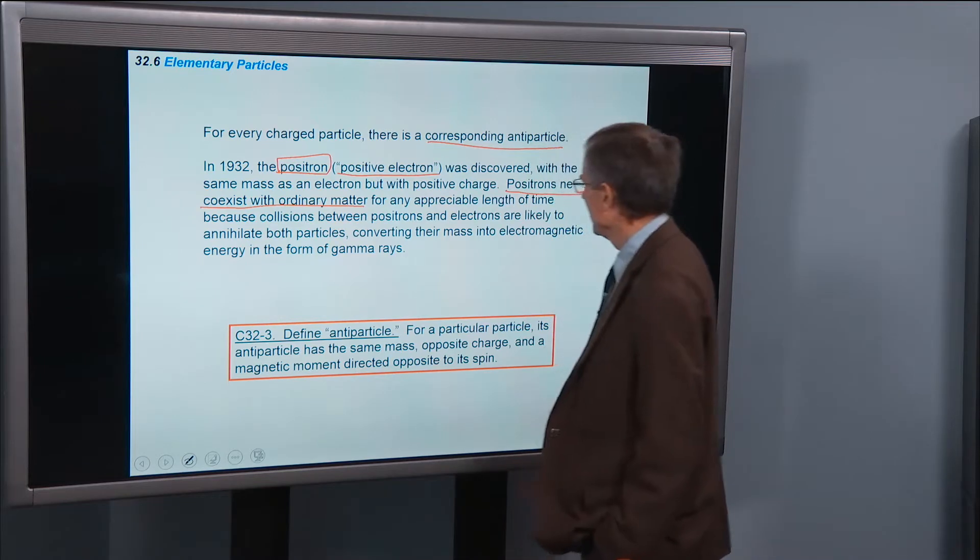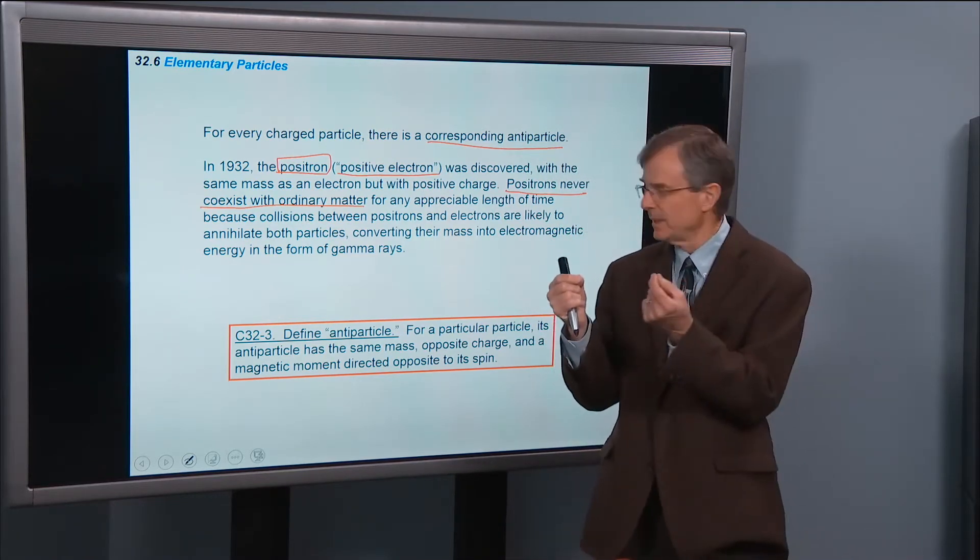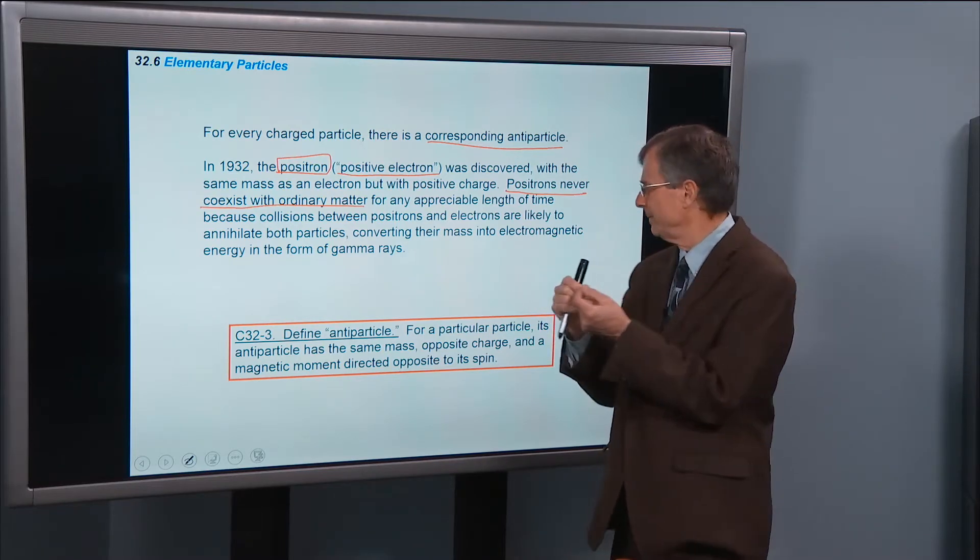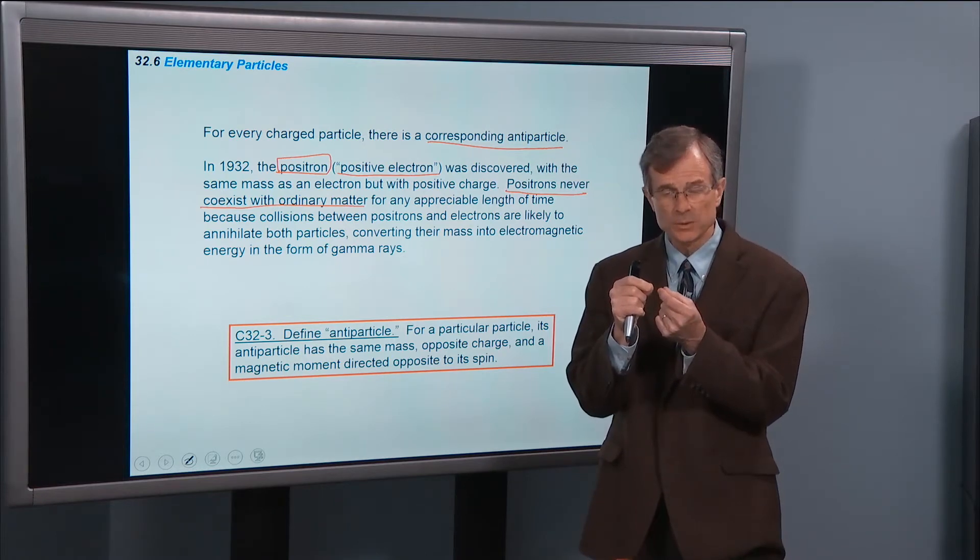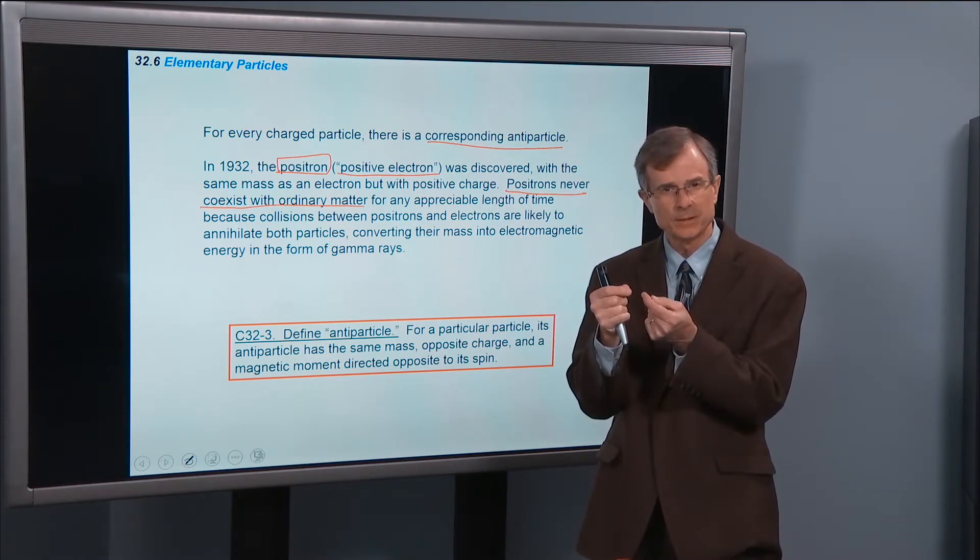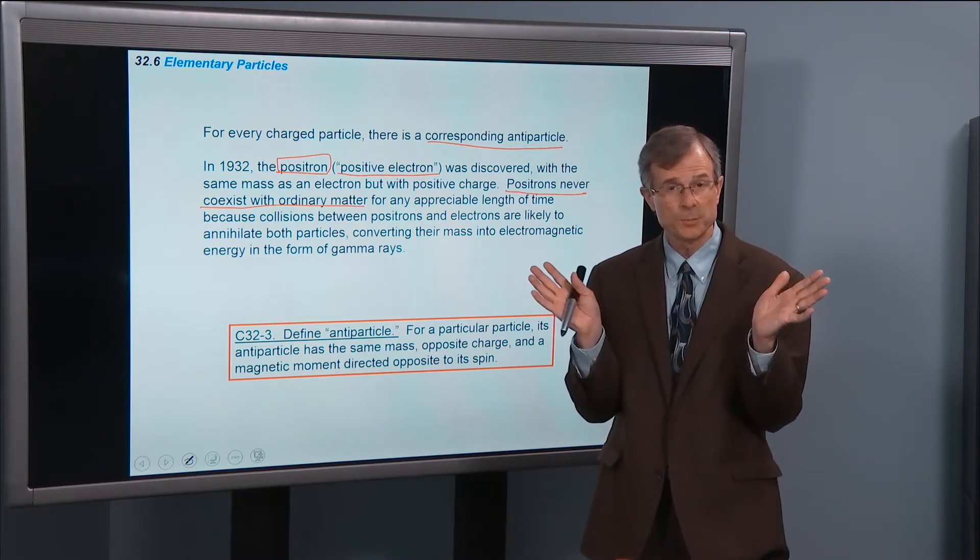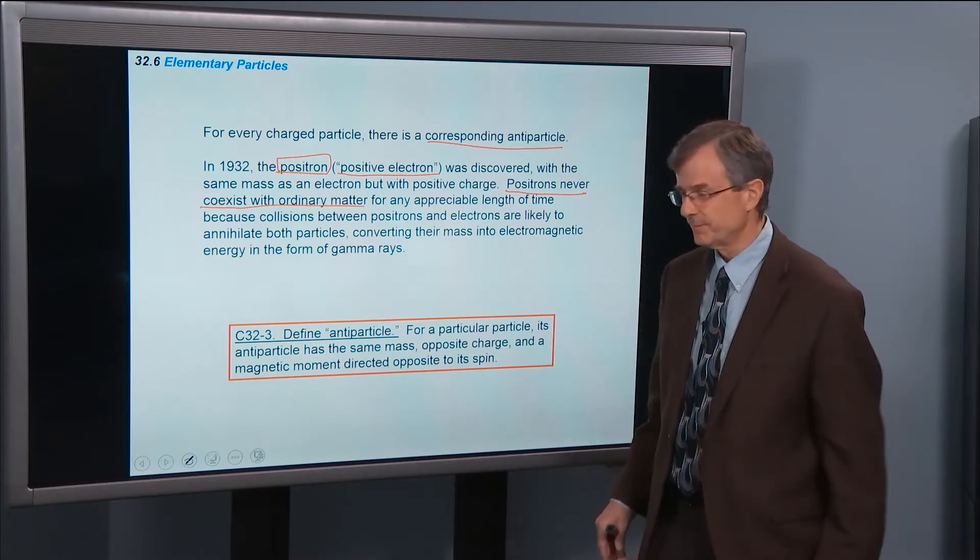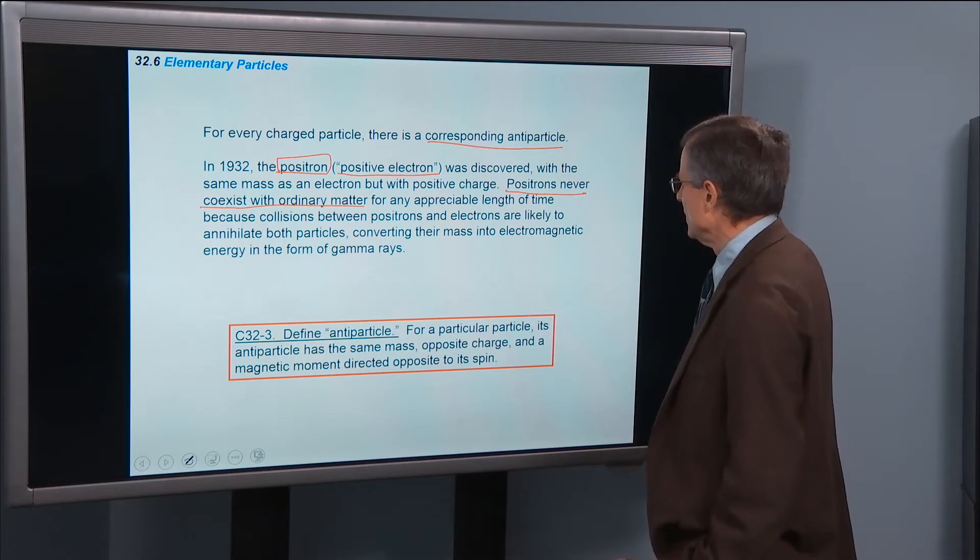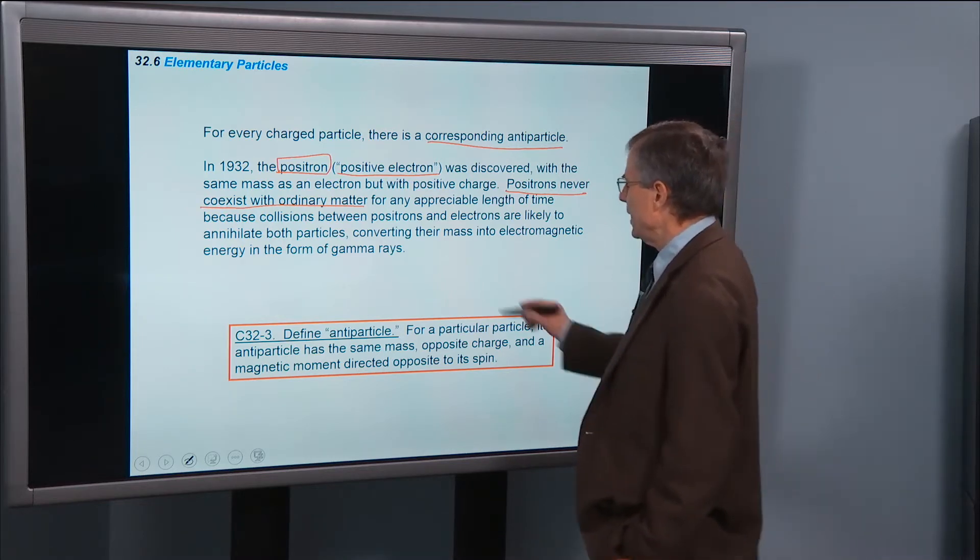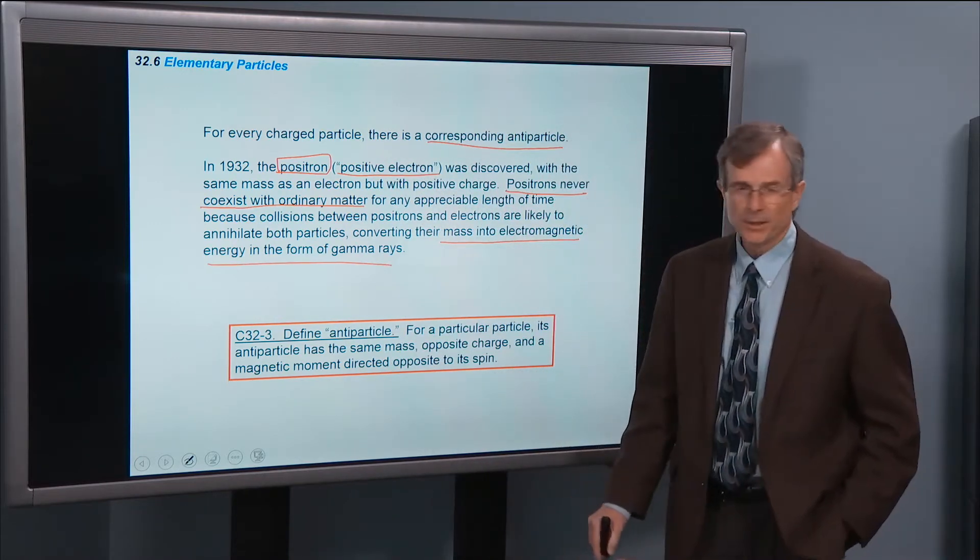Collisions between the positron and electron annihilate these particles. The electron and the positron come together. One's positively charged, the other is negatively charged. They hit, they poof, disappear, and they do create some energy in that process.